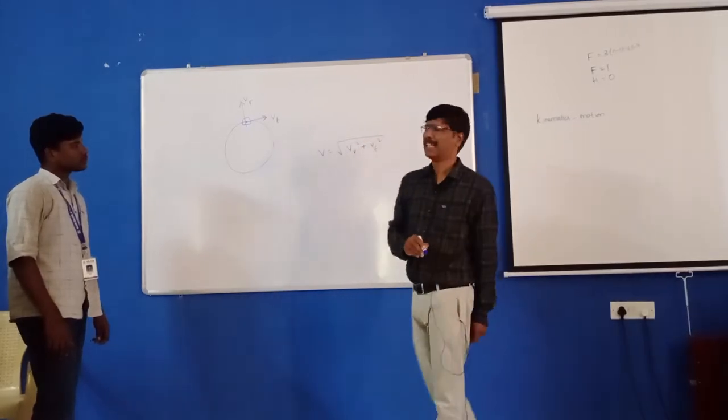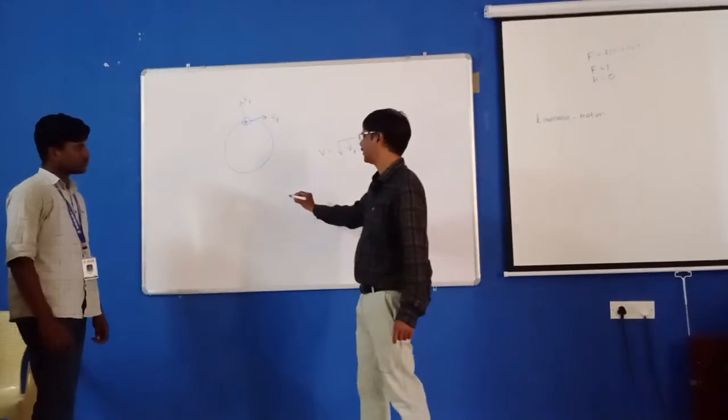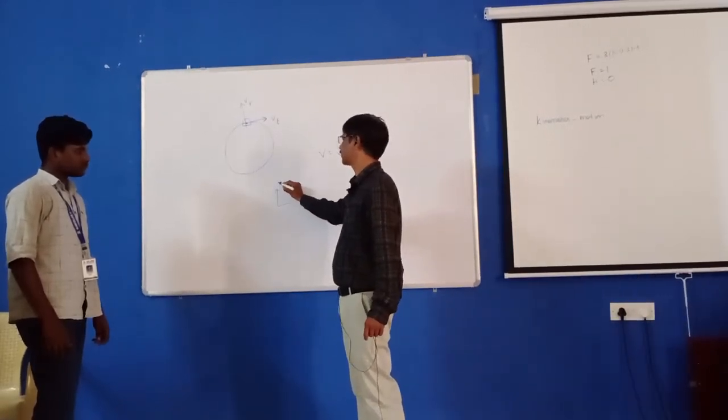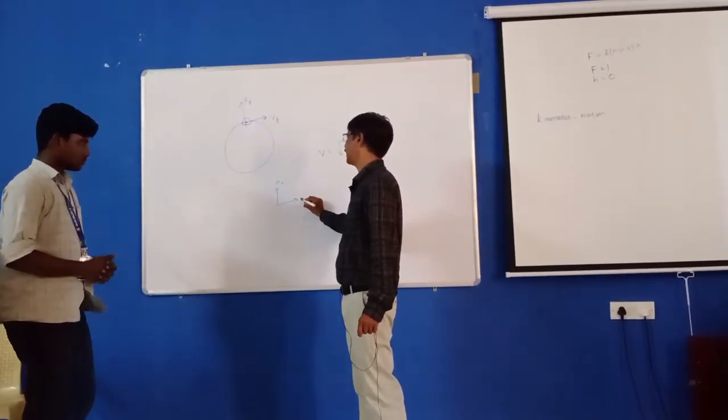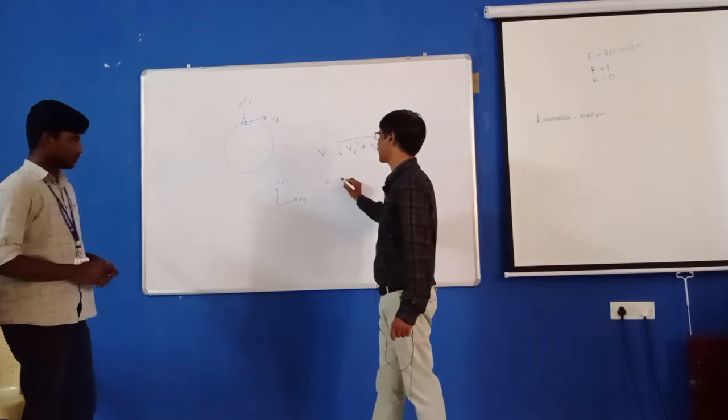To get the tangential velocity. Similarly, we are having two accelerations: radial acceleration and tangential acceleration to get the resultant acceleration.